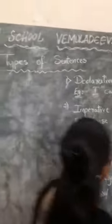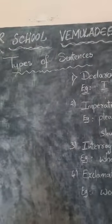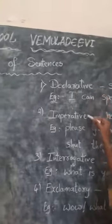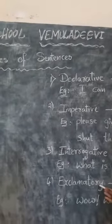Now I want to talk about types of sentences. There are majorly four types of sentences: Declarative, imperative, interrogative and exclamatory.